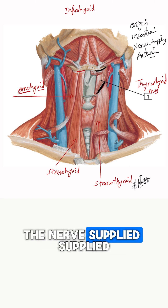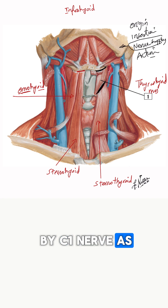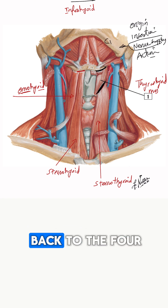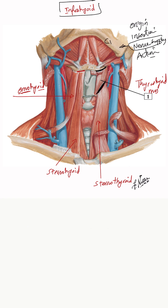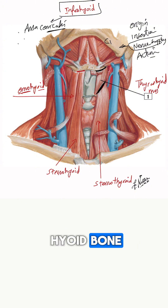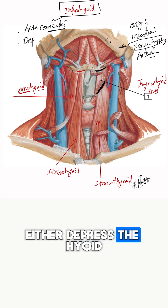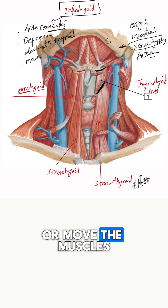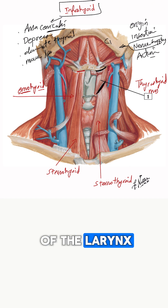The nerve supply of the thyrohyoid is the C1 nerve as part of the ansa cervicalis. All four infrahyoid muscles are supplied by the ansa cervicalis, and they all perform movements with the hyoid bone — either depressing the hyoid bone, elevating the thyroid cartilage, or moving the muscles of the larynx.